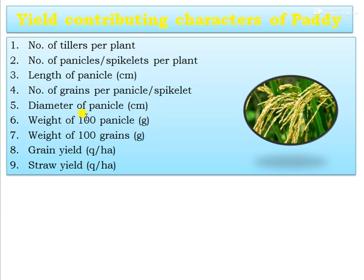The yield contributing characters of paddy include: number of tillers per plant, number of panicles or spikelets per plant, length of spikelet or panicle in centimetres, number of grains per panicle or spikelet, diameter of panicle in centimetres, weight of 100 panicles in grams, weight of 100 grains in grams, grain yield in quintals per hectare, and straw yield in quintals per hectare. These are the major yield contributing characters of paddy.